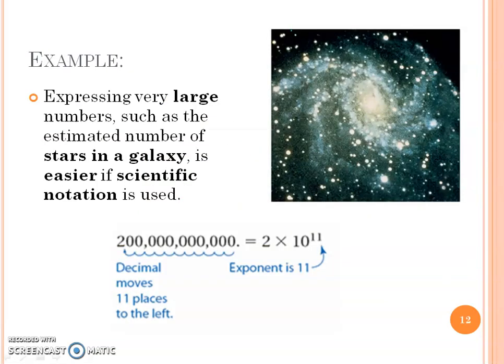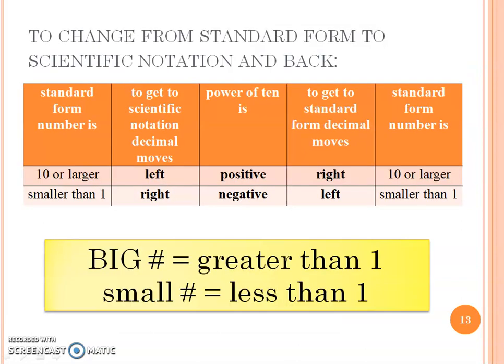So why do we do this? Because expressing very large numbers, like stars in the galaxy, would be a pain in the butt to be writing all of these numbers down. So to make it in scientific notation and have that exponent just makes life a little bit easier for scientists to deal with really large numbers or really small numbers.